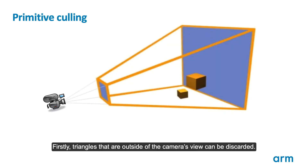Firstly, triangles that are outside of the camera's view can be discarded, because we can guarantee they have no visible impact on screen.